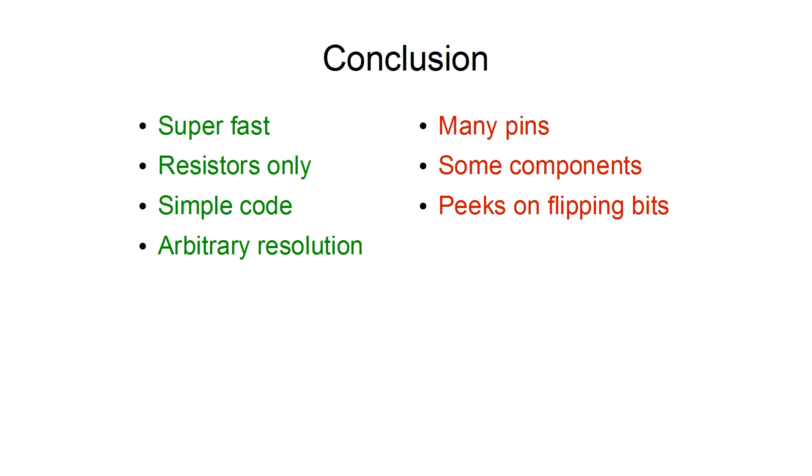Let's get to the conclusion. We have some advantages and some disadvantages. This digital to analog converter is super fast. You have seen it 3MHz. It's built from two kind of resistors only. No active components are needed unless you want to have high resistance here. The code is simple as it can get. No timing needed. You just write the value to your port. The resolution is arbitrary. You are just limited by the pin count of your microcontroller.